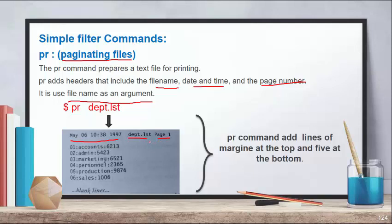After the header it will leave some blank lines at the top, and in the footer it will also leave some lines. So the PR command adds some lines of margin at the top and some lines at the bottom. Some lines are skipped in the header area and some in the footer area.